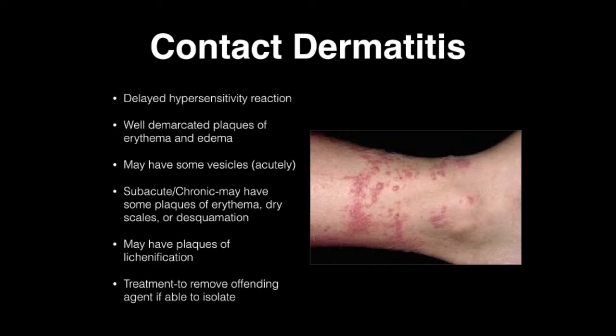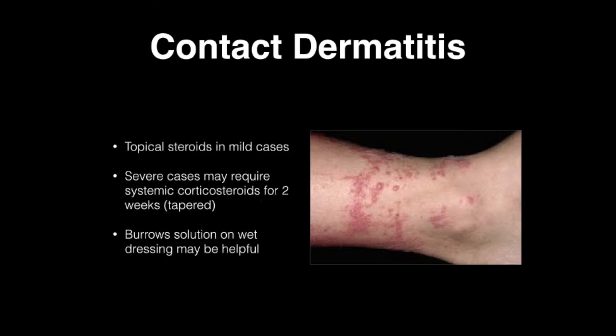The main treatment in contact dermatitis is to remove the offending agent if you're able to isolate it, which sometimes can be more difficult than others. Topical steroids are helpful in mild cases. Severe cases are going to require systemic corticosteroids for up to two weeks — you want to taper the dose with that. A Burrow solution on wet dressings may be helpful, and you may have to add some antihistamines for the patient's itching symptoms.